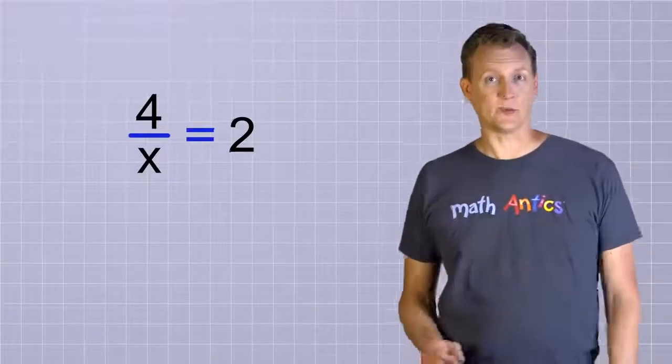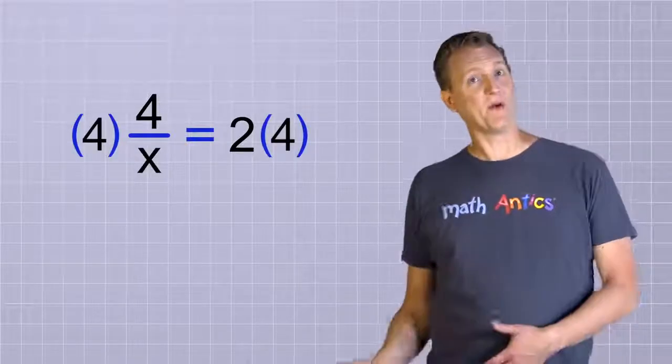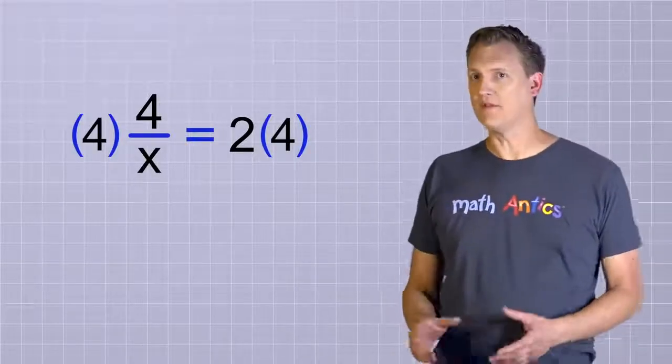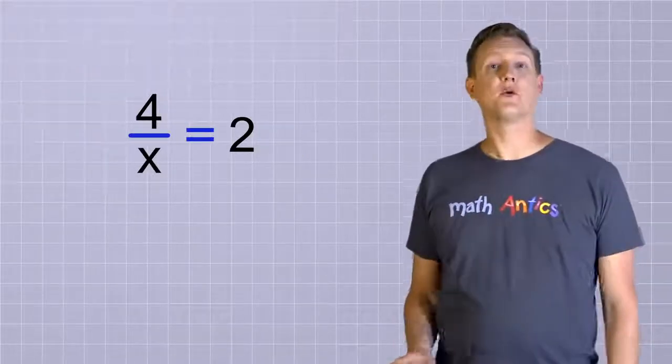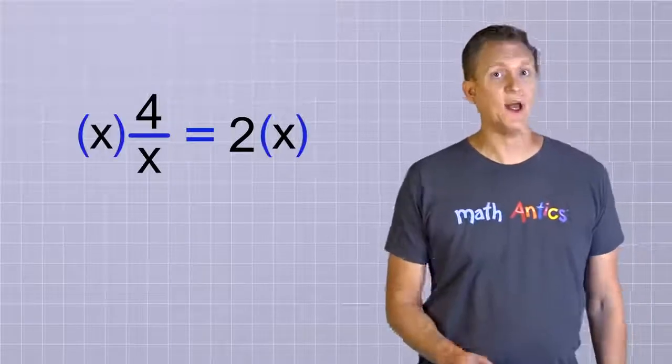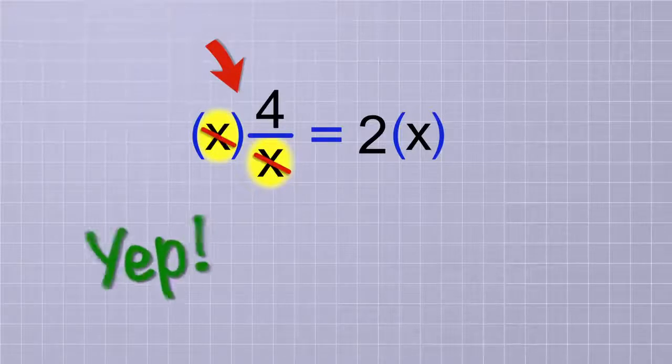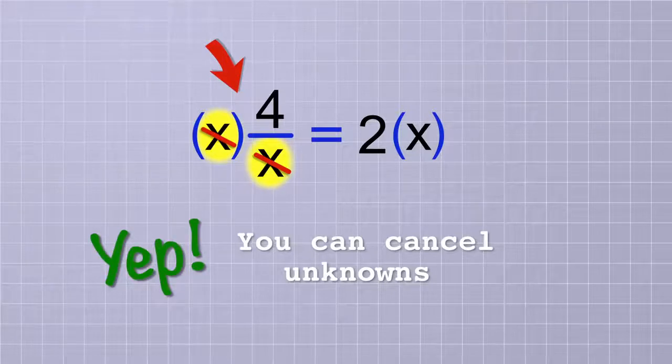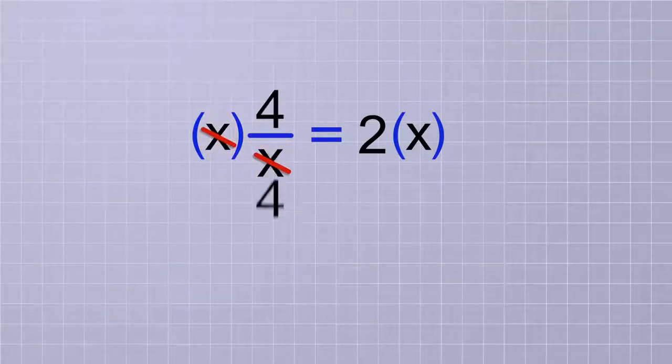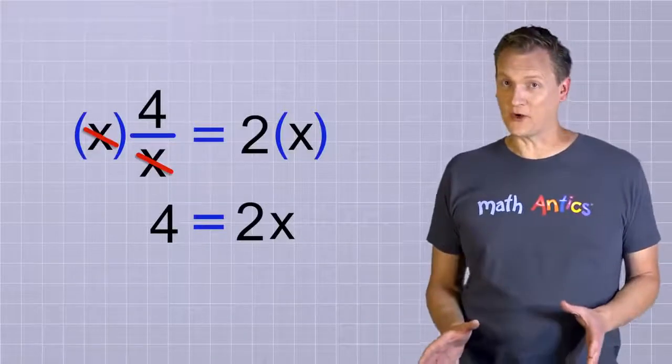4 over x equals 2. Well, your first thought might be to multiply both sides by 4. But that won't help us here, because both of the 4's would be on top, so they wouldn't cancel each other out. Instead, what we need to do is multiply both sides by x. Watch what happens then. The x's on this side of the equation will cancel. You can cancel unknowns and variables exactly like you can regular numbers. That will leave us with just 4 on this side of the equation. And on the other side, we have 2 times x.